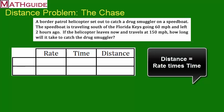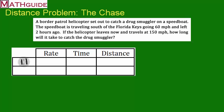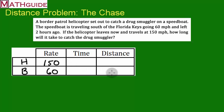We've got two things in this problem. I've got the helicopter, which I'm going to call H, and I've got a boat, B. We know the boat is going at a rate of 60 miles an hour, so I'll put 60 miles per hour for the boat — the key is that our time is in hours. The helicopter is traveling at 150, so I'll put 150 for its rate. I don't know how far these things will be traveling or how much time it will take for them to meet.